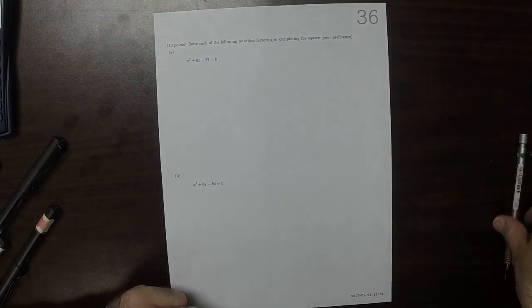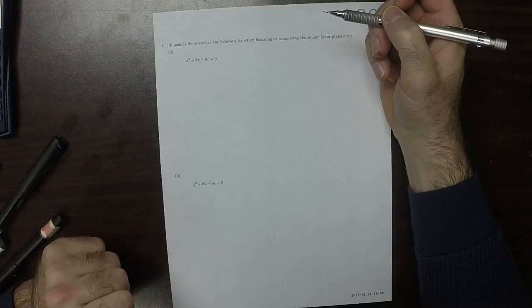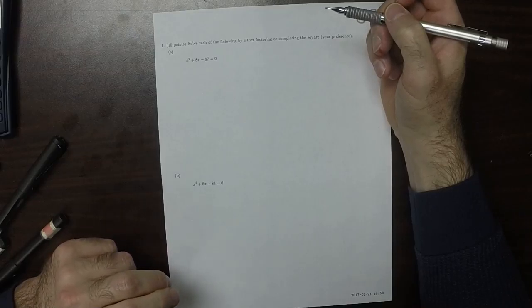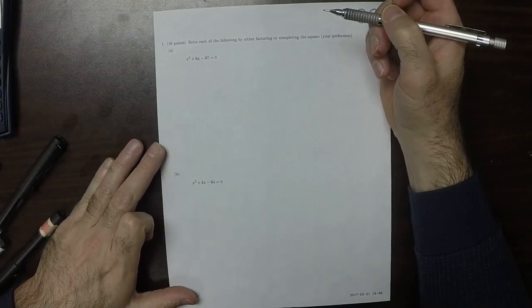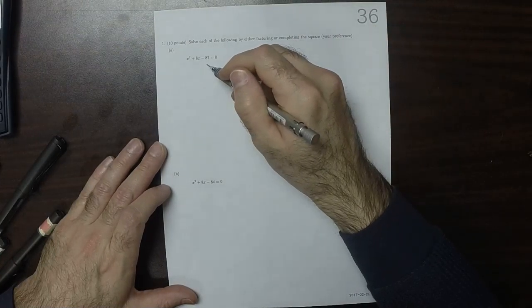This is the solution to written homework 36. So it says, either by factoring or completing the square, your preference. Okay. So let's see if we can factor this one. That would be nice.